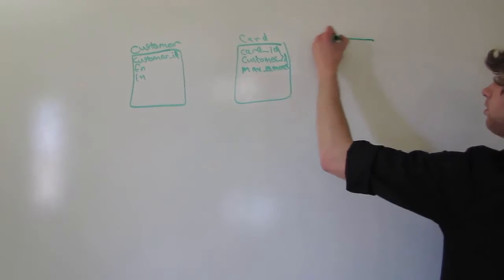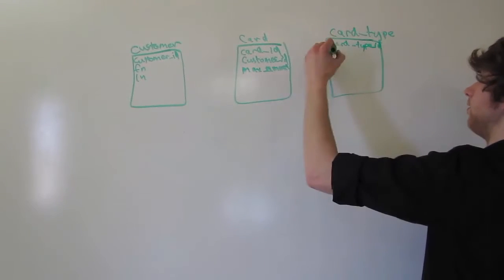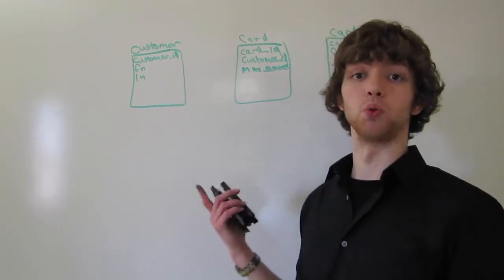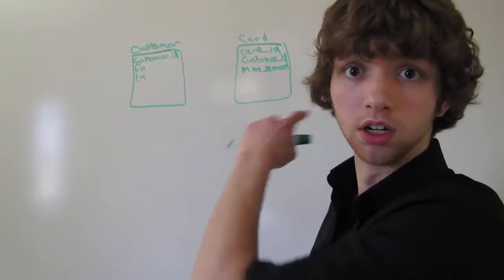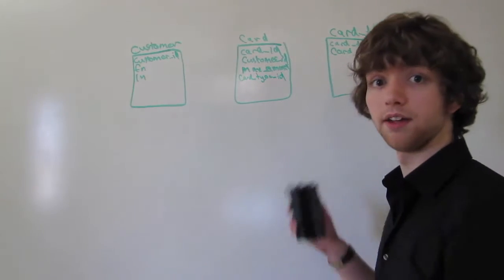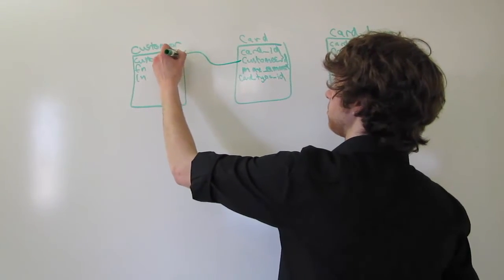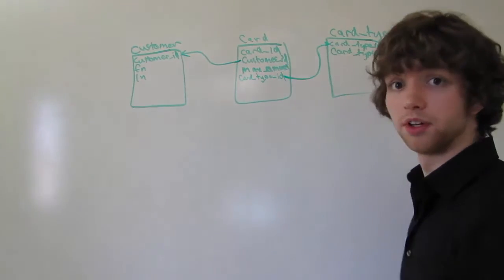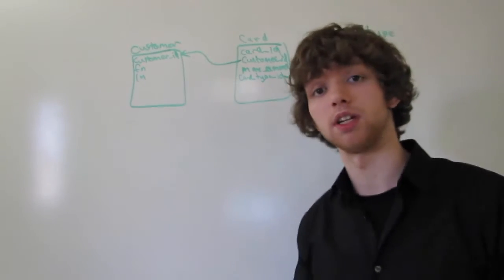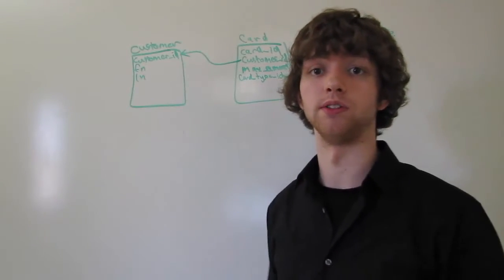So let's design this. We're going to have a lookup table which is card type. It's going to have a card type ID and then the card type name, plus any other info about the card type. Then in the card table, we're going to reference that with a foreign key — card type ID. Customer ID is a foreign key to the customer table, and card type ID is a foreign key to the card type table. We want to join these and create a generated table containing information from all three.